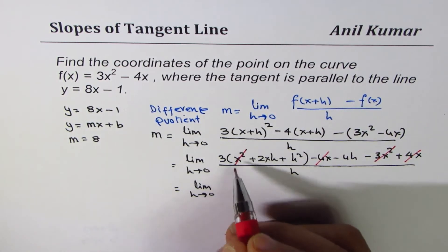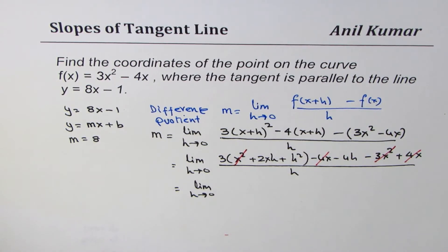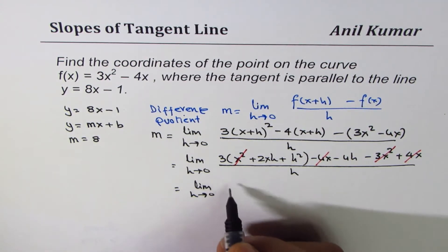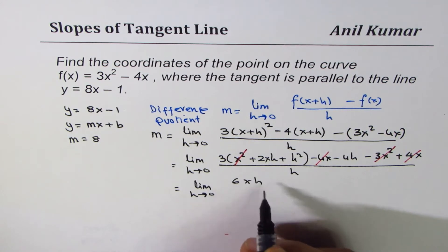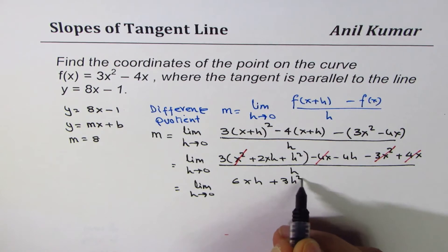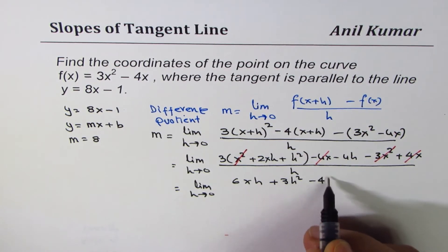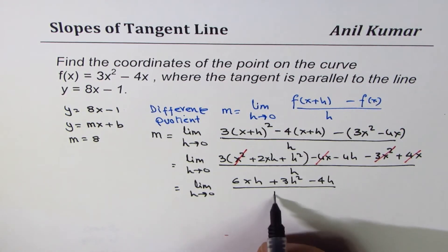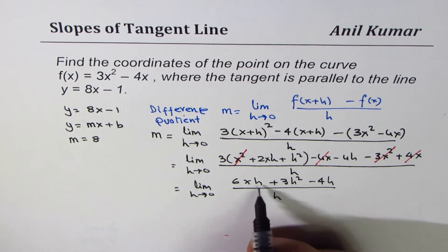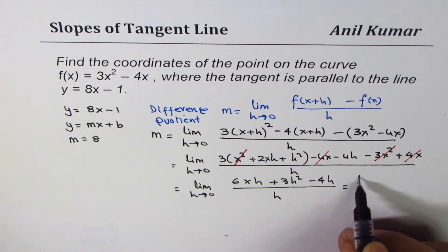Let's open the bracket: 3 times 2xh is 6xh, 3 times h² is 3h², and then we have minus 4h divided by h. Here h is common. Since h is common we can cancel these h's.